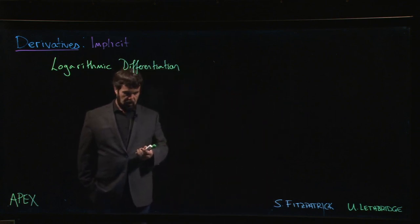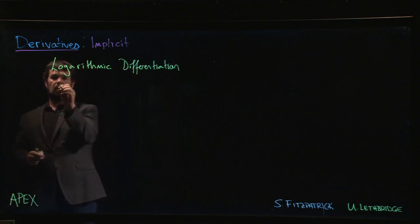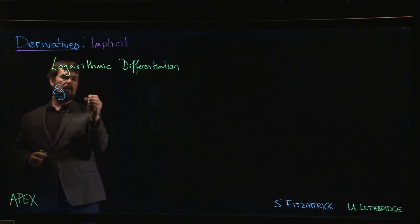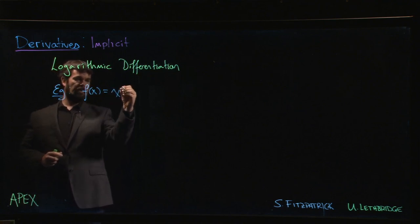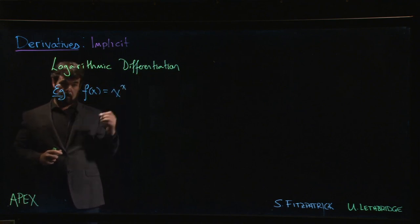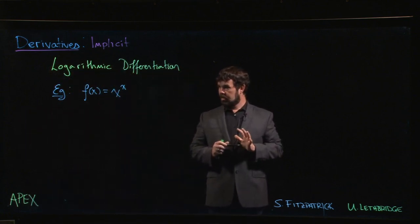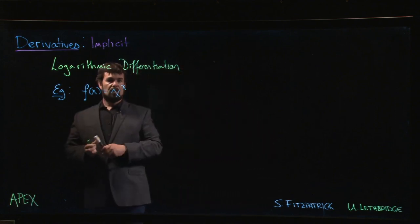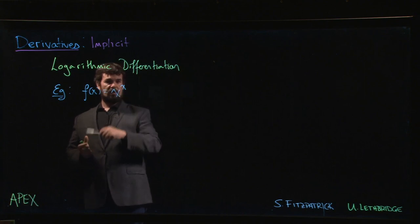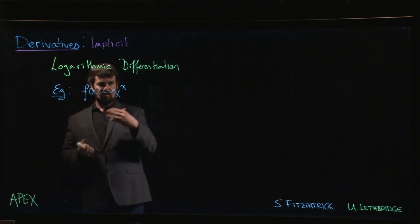The standard example where we might run into trouble is the following function: x to the power of x. If you think about this for a second, this is a pretty problematic example because we know how to deal with powers, right? If this is a constant, we know how to take the derivative with the power rule.